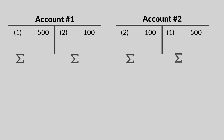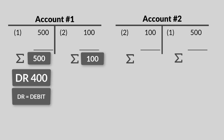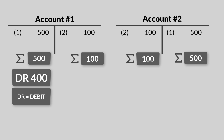Now to calculate the balance for the accounts, we add up the amounts on the debit and credit side for each account separately. Account number one has 500 on the debit side and 100 on the credit side. We deduct the smaller sum of credits from the bigger total of debits, which gives us 400 — in accounting, we call this a debit balance of 400. For account number two, it's the opposite: it has a credit total of 500 and total debits of 100, so account number two has a credit balance of 400.